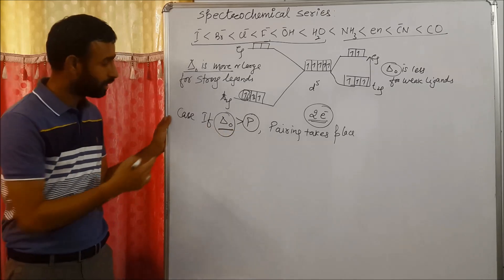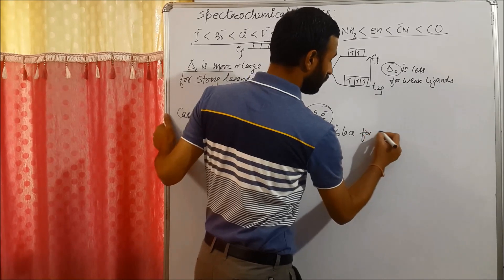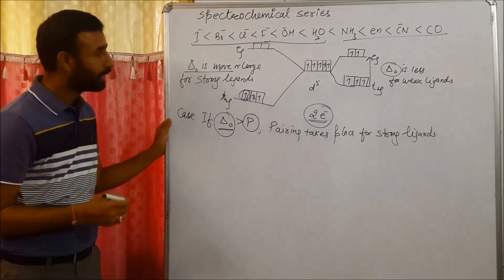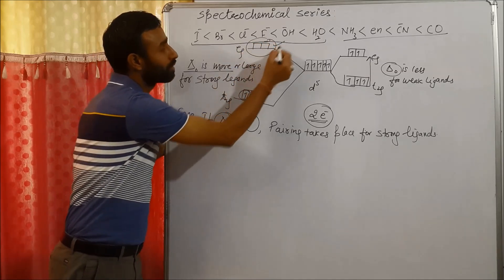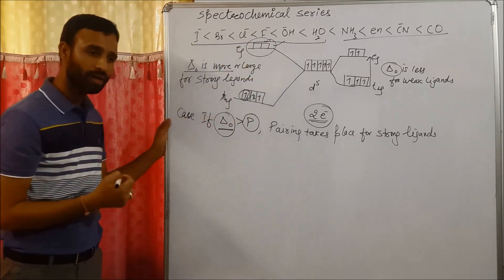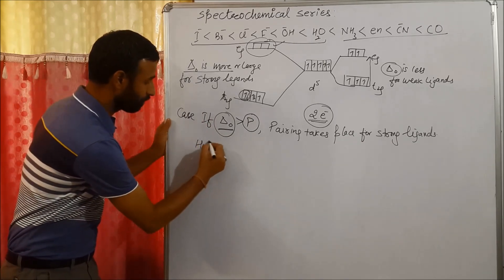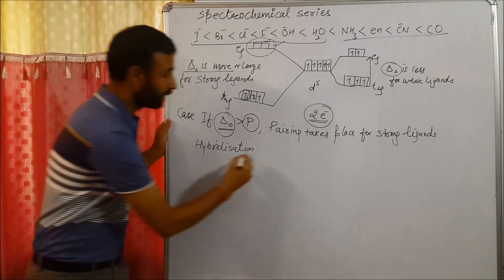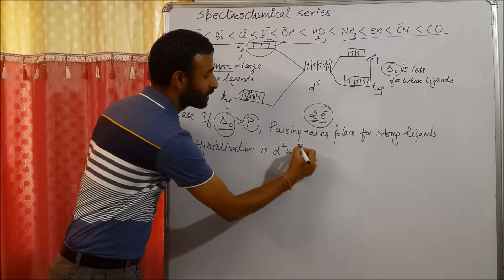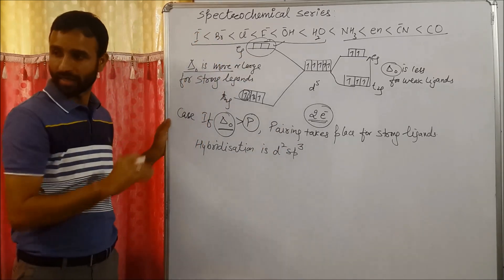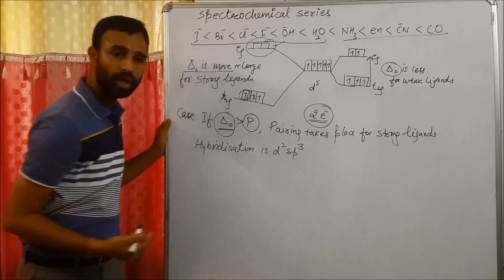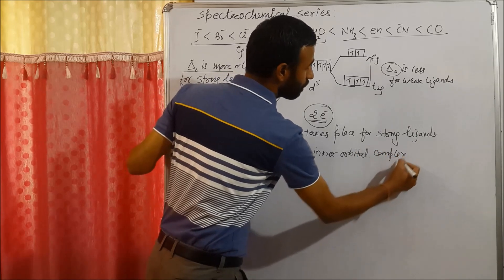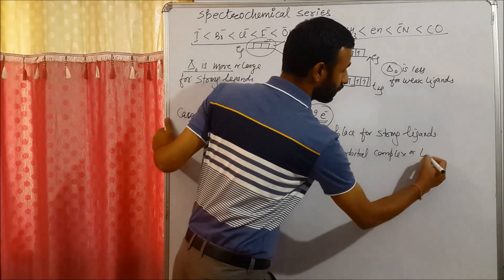So pairing takes place for strong ligands. Means if metal is attached to strong ligands, then pairing takes place. If pairing takes place, these d orbitals are vacant. Now these two d orbitals are vacant. So hybridization for this type of complex, this type of octahedral complex, is d2sp3. Because inner d orbitals are vacant. So hybridization is d2sp3. And this type of complex is known as inner orbital complex, or low spin complex.